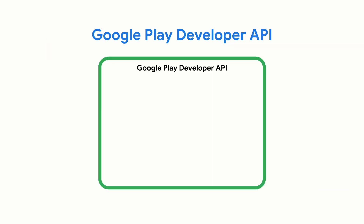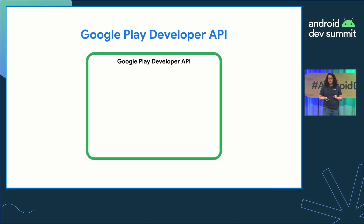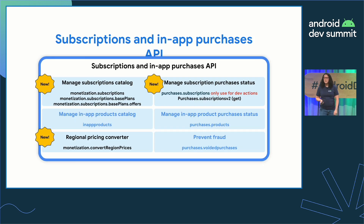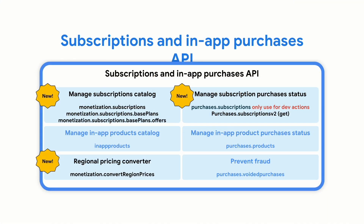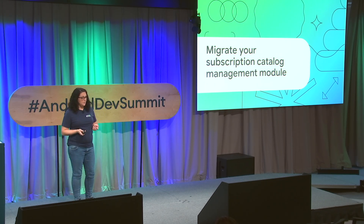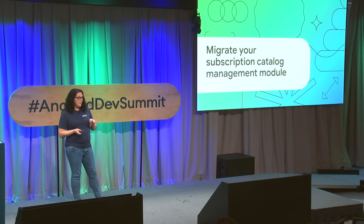I'll be referring to the Google Play Developer API several times — specifically, the component called the Subscriptions and In-App Purchases API, built to manage in-app purchases from your app. The new backend API includes a new set of endpoints to manage your subscriptions catalog programmatically, all under monetization.subscriptions. It also includes a new pricing conversion endpoint to translate any price to all supported regions and currencies on Google Play, and a new endpoint to manage your subscription purchase status. If you manage your product catalog programmatically, once you make your subscriptions editable on Play Console, the old endpoint won't work for them.